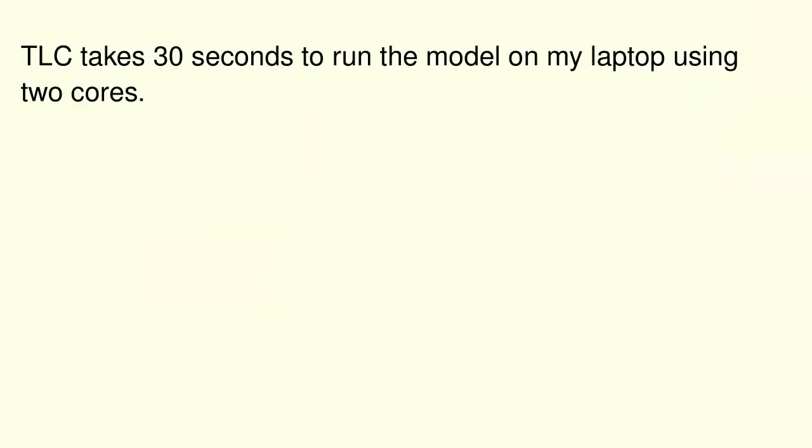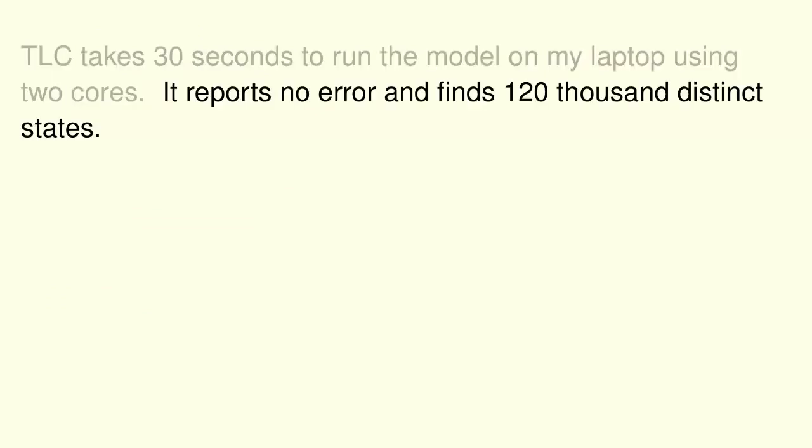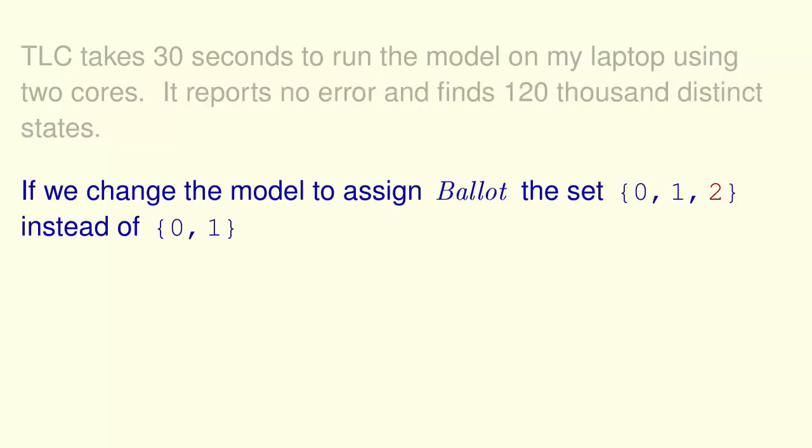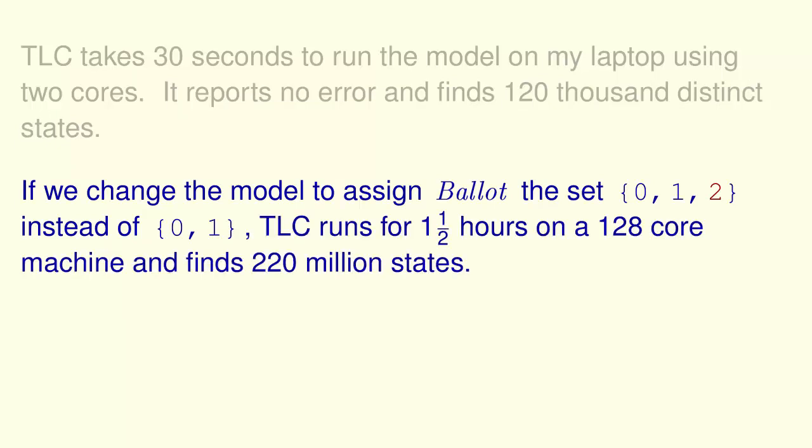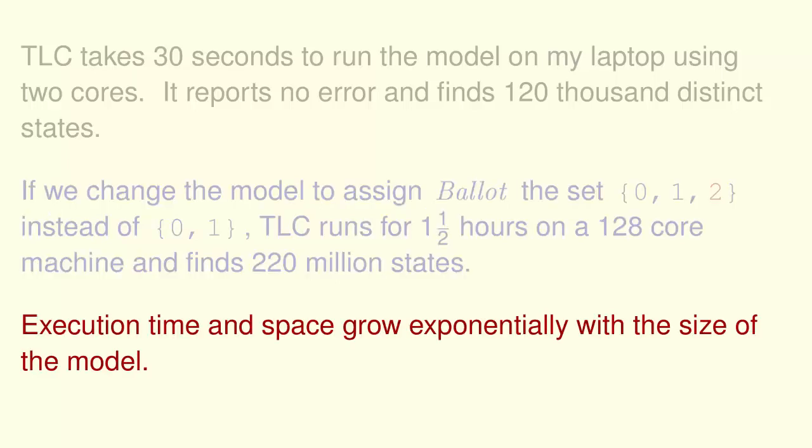TLC takes about 30 seconds to run the model on my laptop using two cores. It reports no error and finds about 120,000 distinct states. If we change the model to assign ballot a set of three numbers instead of two, TLC runs for about one and a half hours on a 128 core machine and finds about 220 million states. We use very small models because execution time and space grow exponentially with the size of the model.